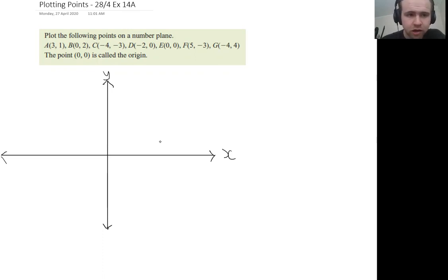To plot a point on the number plane, we first look at this first number, and that is going to be its x value. Now why is the first number x? Well, because x comes before y in the alphabet. So that's how you remember: the first value is x, the second value is y, because x is before y in the alphabet.